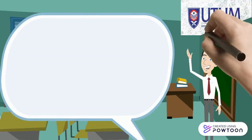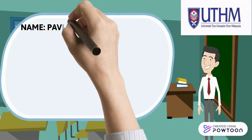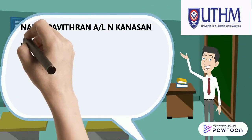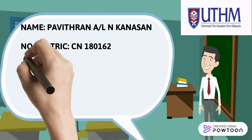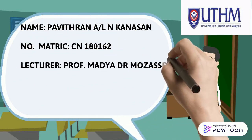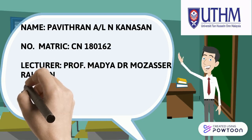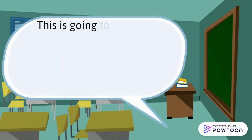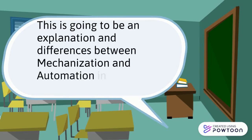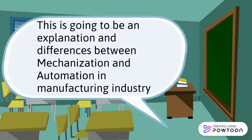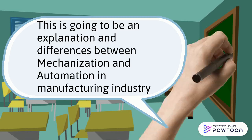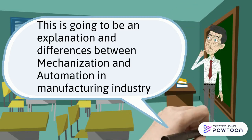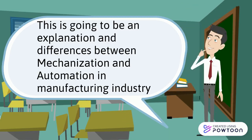Good morning to Dr. Muzaseh and my friends. I am Amir Pavitran, son of Encarnacion, with metric number CN180162. This assignment will be an explanation of and differences between mechanization and automation in the manufacturing industry, in terms of definitions and the differences.